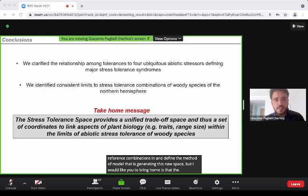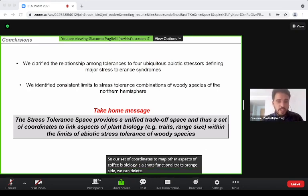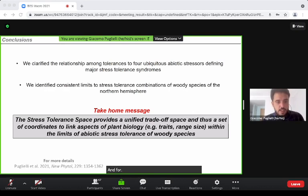But what I would like you to bring home is that this space is actually a map—a set of coordinates to map other aspects of tree species biology, such as functional traits or range size, within the limits of abiotic stress tolerance of these species. For more detail you can check the original paper. Thanks for your attention.